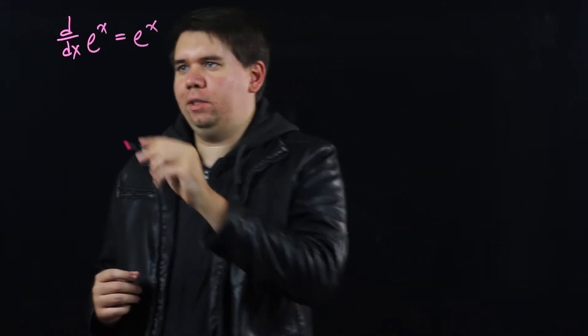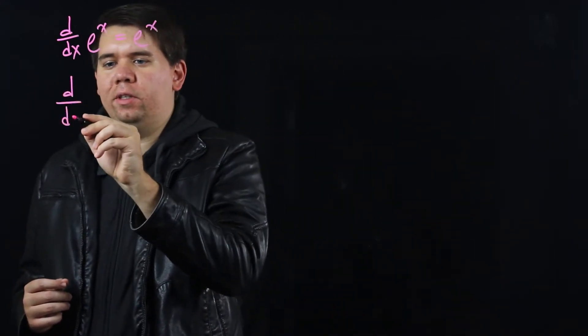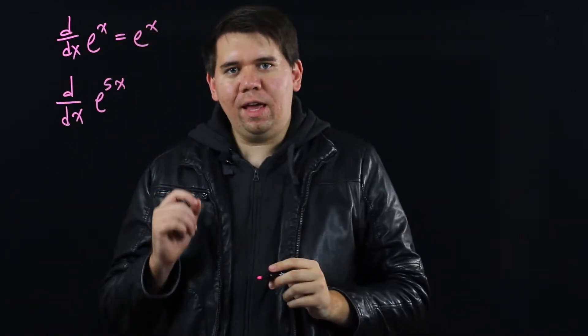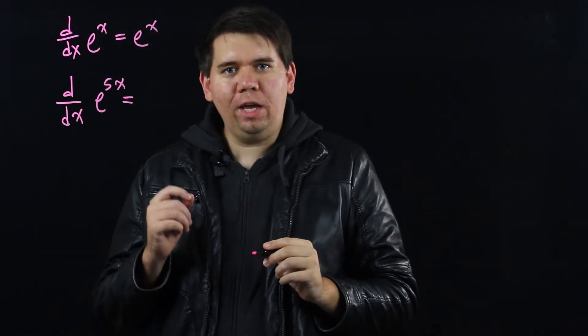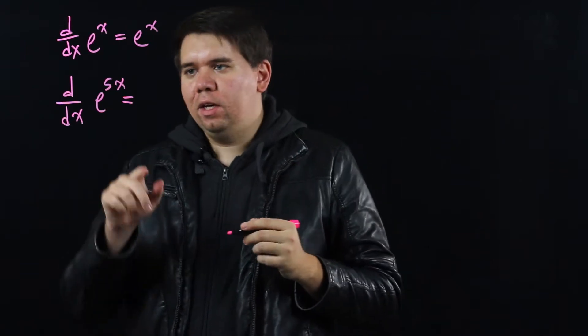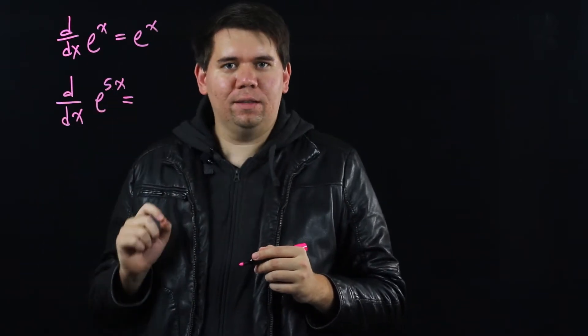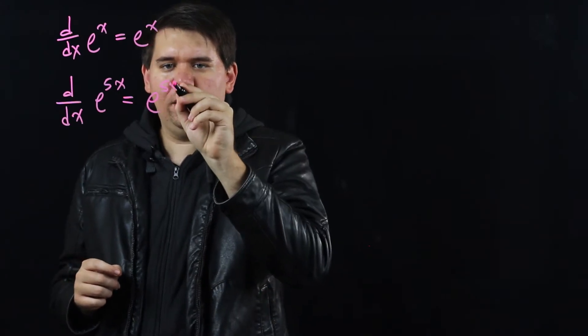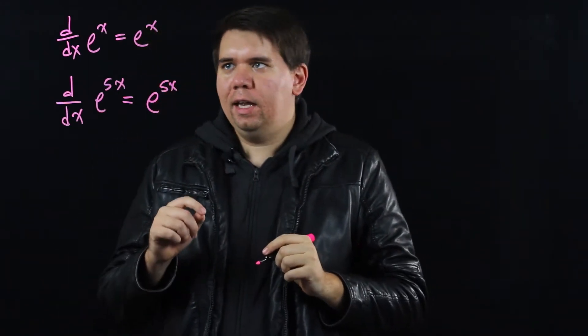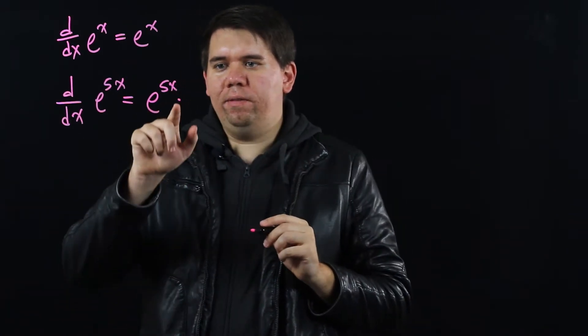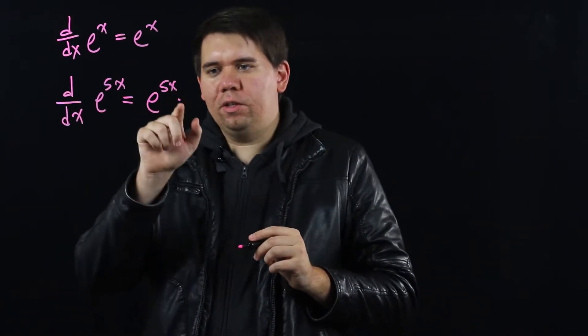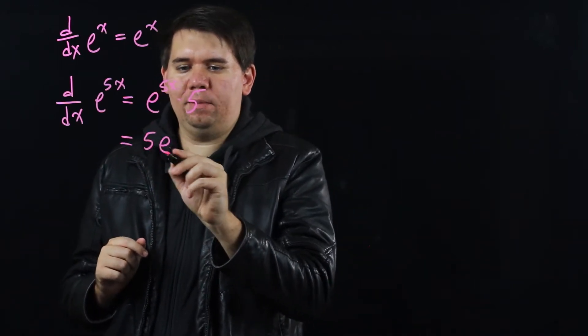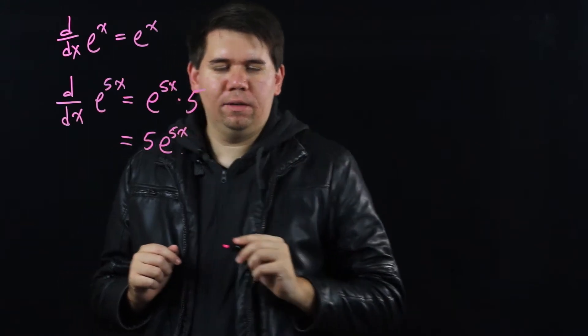And if it's a slightly modified function like e to some other power, say e to the 5x, we know how to calculate that simply using the chain rule. The chain rule says leave the inside function 5x the same. e to the, its derivative is e to the, so here it's e to the 5x. And then you times it by the derivative of that inside function. The derivative of 5x is just 5. Or you might write this as 5 times e to the 5x.